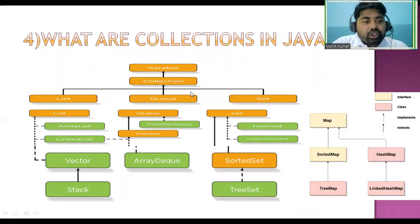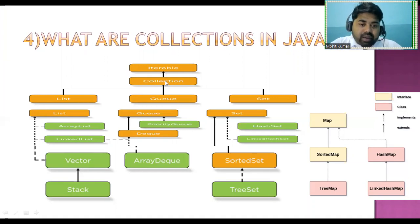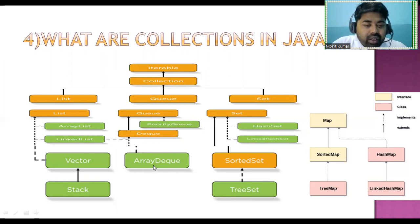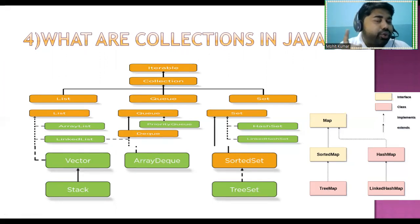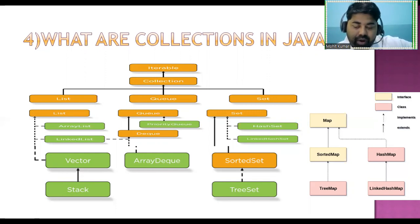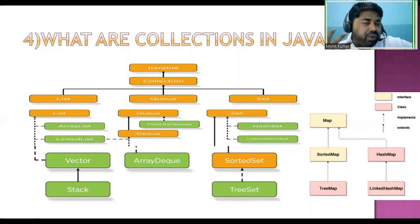So, what are the collections in Java? The super interface is 'Iterable', then sub-interface is 'Collection', then we have List, Queue, and Set. Under List: ArrayList, LinkedList, Vector, Stack. Under Queue: PriorityQueue, Deque, ArrayDeque. Under Set: HashSet, LinkedHashSet, SortedSet, TreeSet. We also have Map: SortedMap, HashMap, TreeMap, and LinkedHashMap. The course also covers OOP concepts, String, interface, and abstract class.